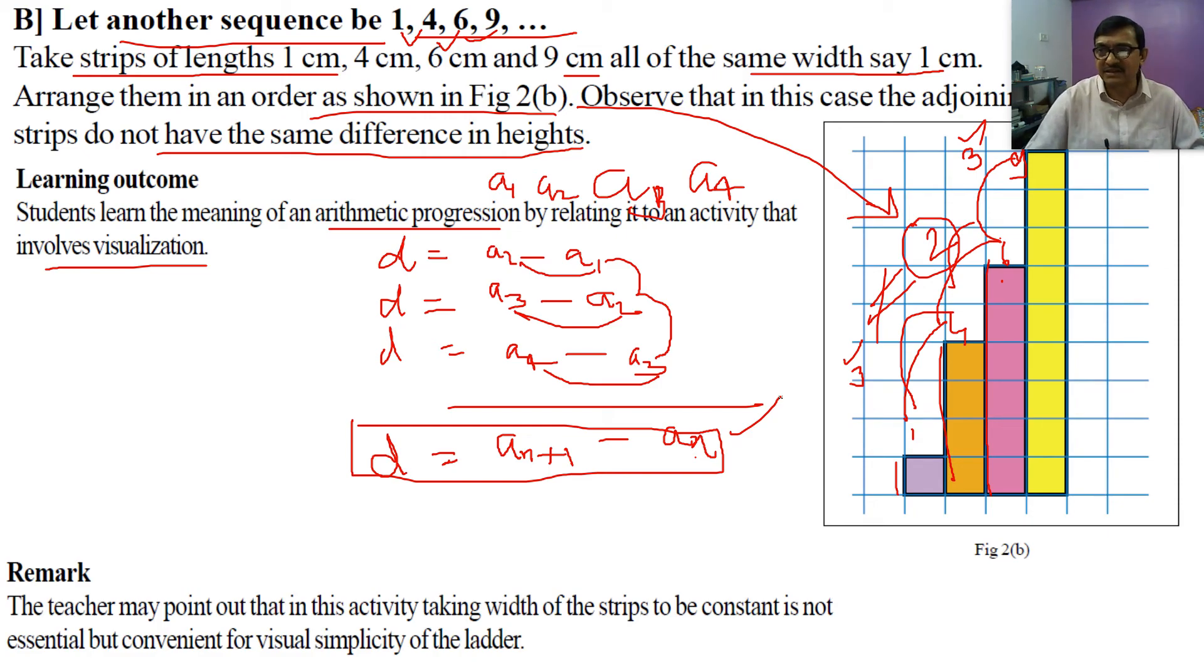Many teachers requested, so I added a line for them - not for students, only for teachers. The teacher may point out in this activity, taking width of the steps to be constant is not essential but convenient for visual simplicity of the ladder. There is no need to worry too much. If the difference between one term and another, second and third, is all equal, then it's an AP. If the common difference is not equal, then it's not an AP. Thank you very much. Please note this in your copy, because after all you need 20 out of 20 from your school. Thank you.